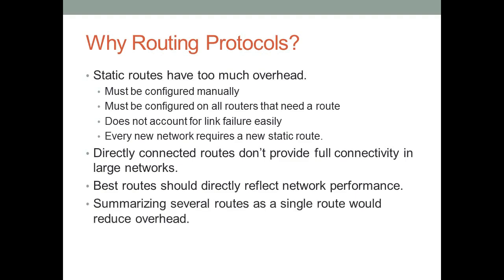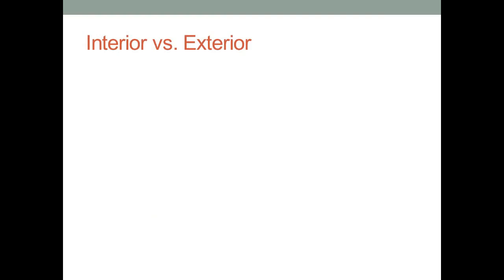We also want to summarize several routes into a single route. Rather than having five or six routes to a group of networks, we could ideally summarize an entire group of networks as a single subnet. There are several different distinctions in the types of routing protocols, and the first is interior versus exterior routing protocols.